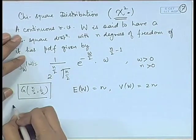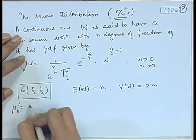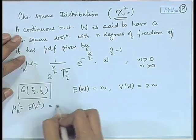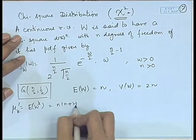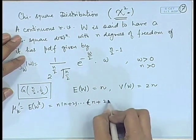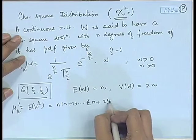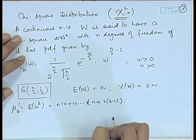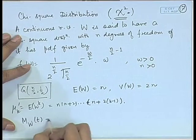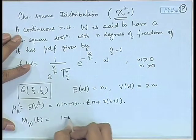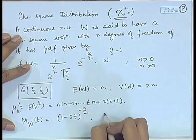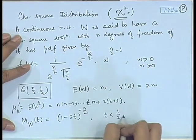We may write a general term: μ'_k = E(W^k) = n(n+2)···(n+2(k−1)). We may also look at the moment generating function, which is equal to (1 − 2t)^(−n/2), valid for t less than 1/2.